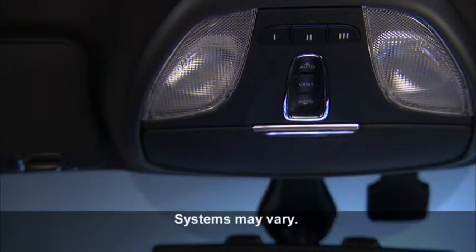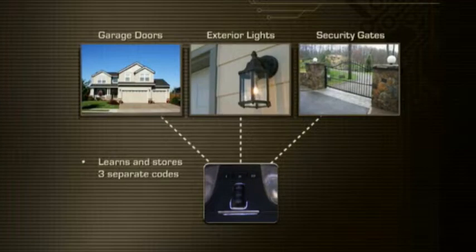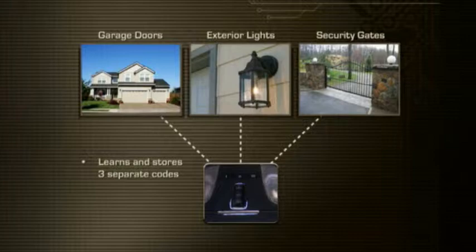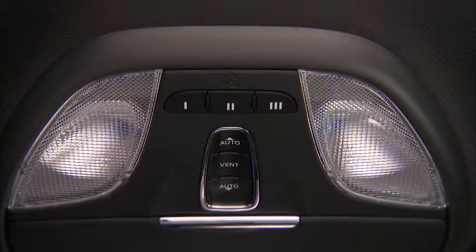Your vehicle may be equipped with the convenience of our HomeLink system. HomeLink replaces up to three remote controls or handheld transmitters that operate devices such as garage door openers, motorized gates, lighting, or home security systems. The HomeLink control buttons are located in the overhead console.